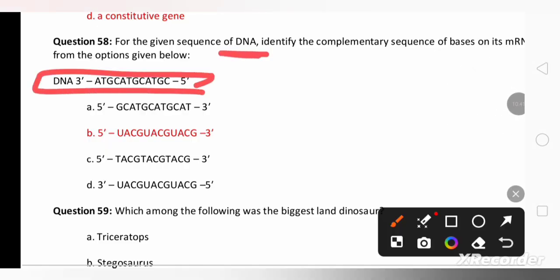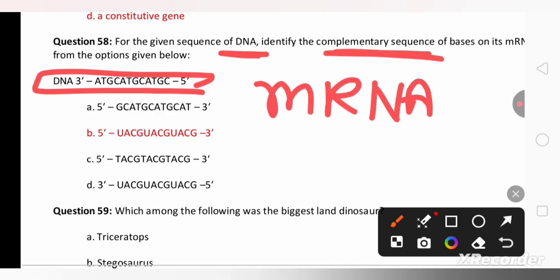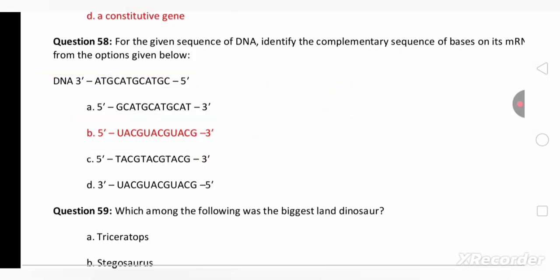For a given sequence of DNA, one of the strand has been given. Identify the complementary sequence of the base in its mRNA. In mRNA you know it very well that in place of thymine, uracil must be present. So complementary of adenine is thymine but thymine won't be present in RNA. In place of thymine, uracil will be present. So accordingly option B is the right answer.